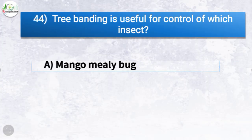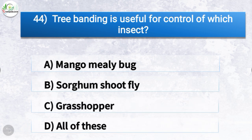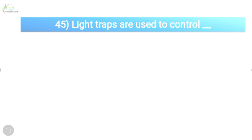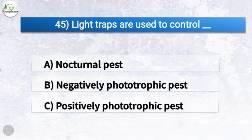Question number forty-four: tree banding is useful for control of which insect? The options are mango mealybug, sorghum shoot fly, grasshopper, or all of these. The correct answer is option A, mango mealybug. So tree banding is useful for control of mango mealybug.